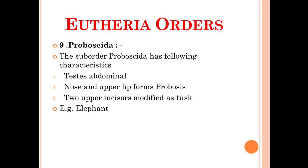The next sub-order is Proboscidae, and the characteristics of animals belonging to this sub-order are that they have testes located in the abdomen, the nose and upper lip form the proboscis, and two upper incisors are modified as tusks. For example, you can note down the elephant. The proboscis is basically the nose of a mammal, especially when it is long and mobile, such as the trunk of an elephant.